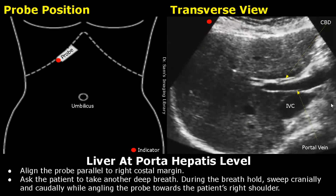Aligning the probe in a similar manner, ask the patient to take another deep breath and sweep up and down while angling the probe towards the patient's right shoulder, and you will locate the porta hepatis. This is the liver in transverse view at the level of porta hepatis. Here is the portal vein and the CBD anterior to it. The inferior vena cava is seen in cross section.